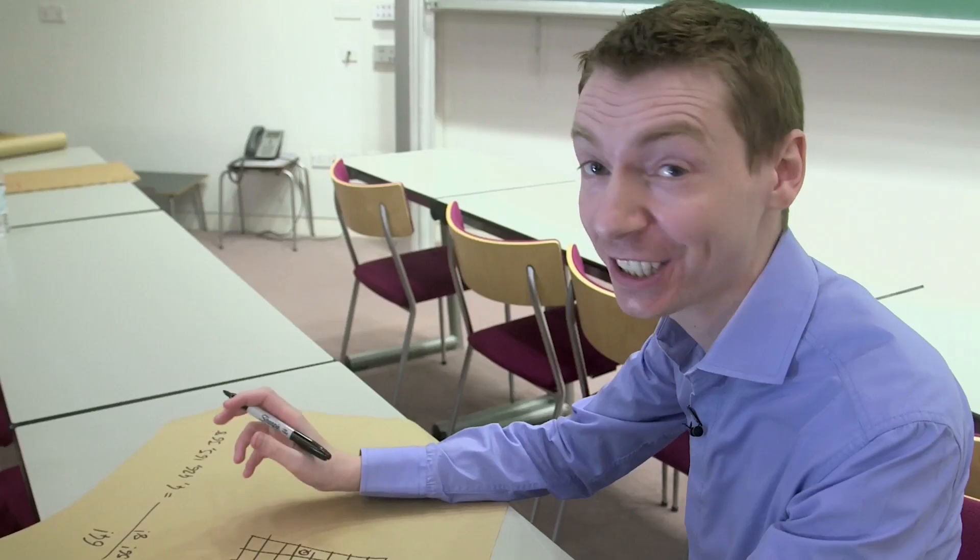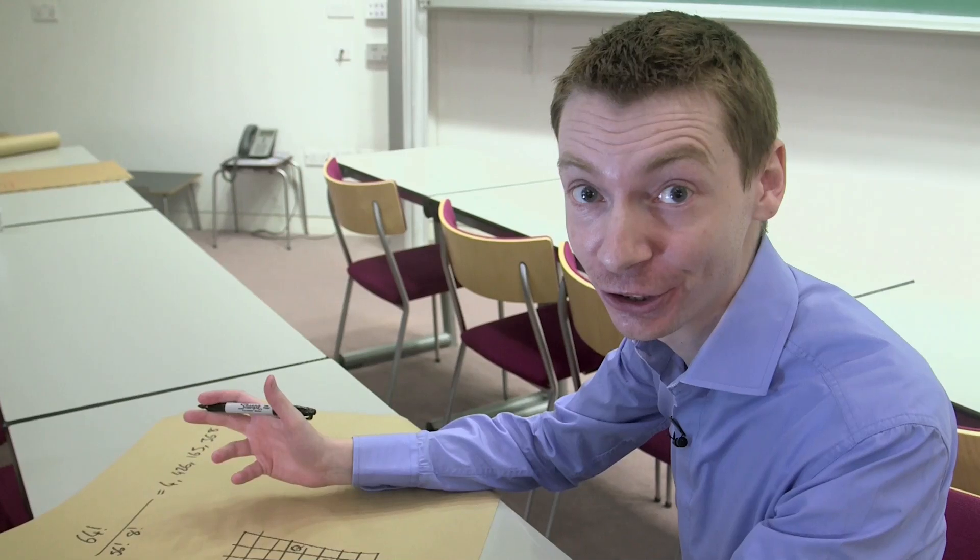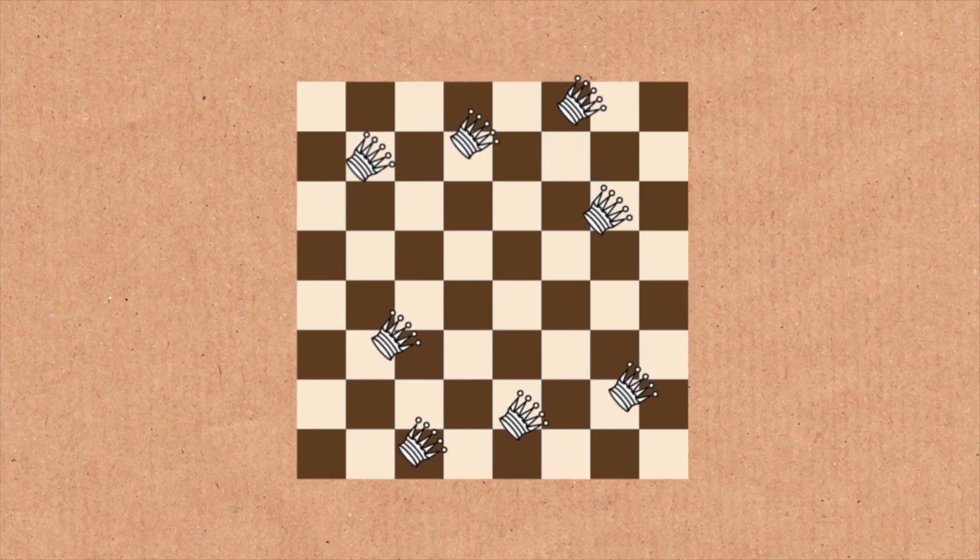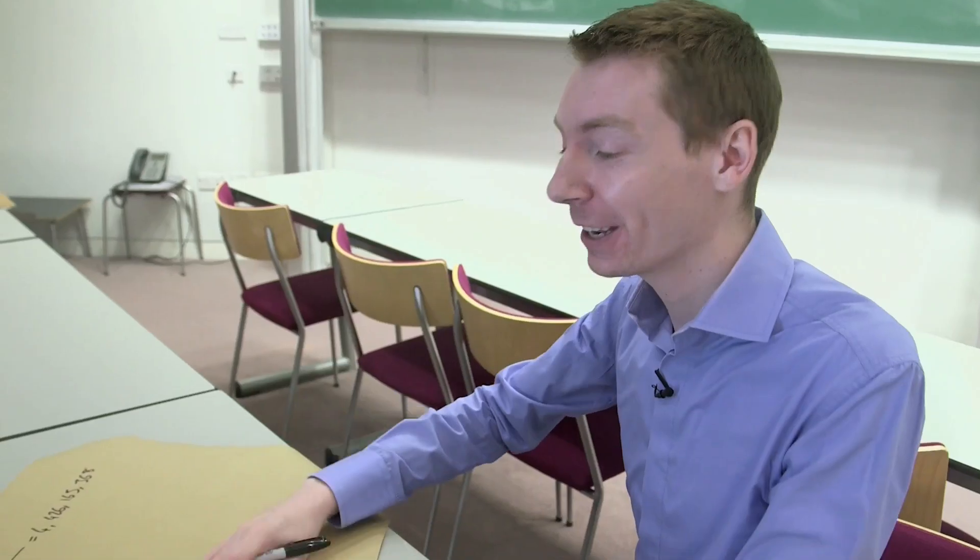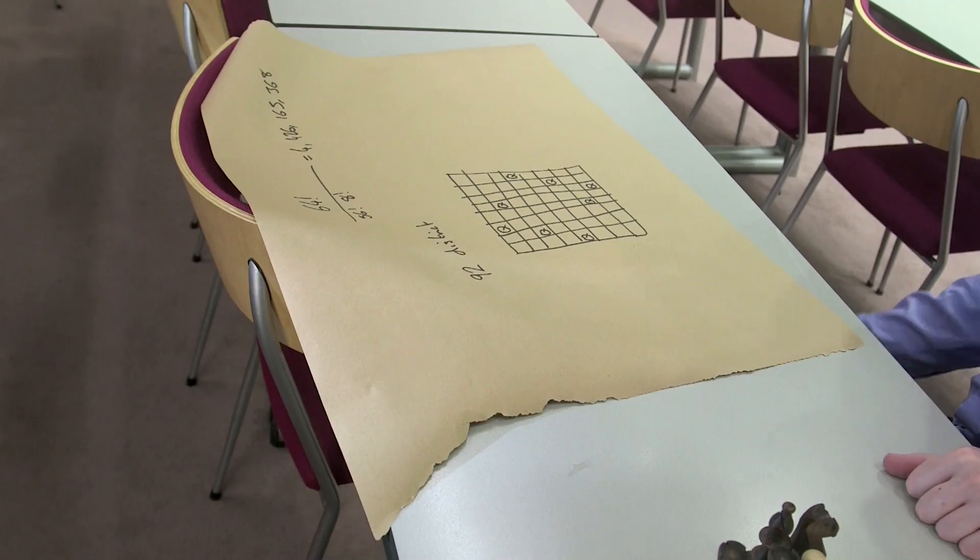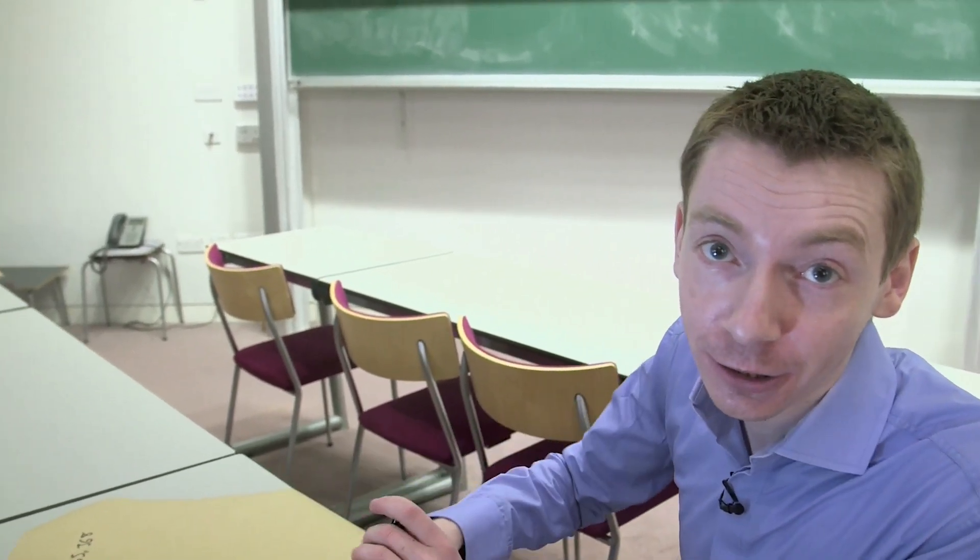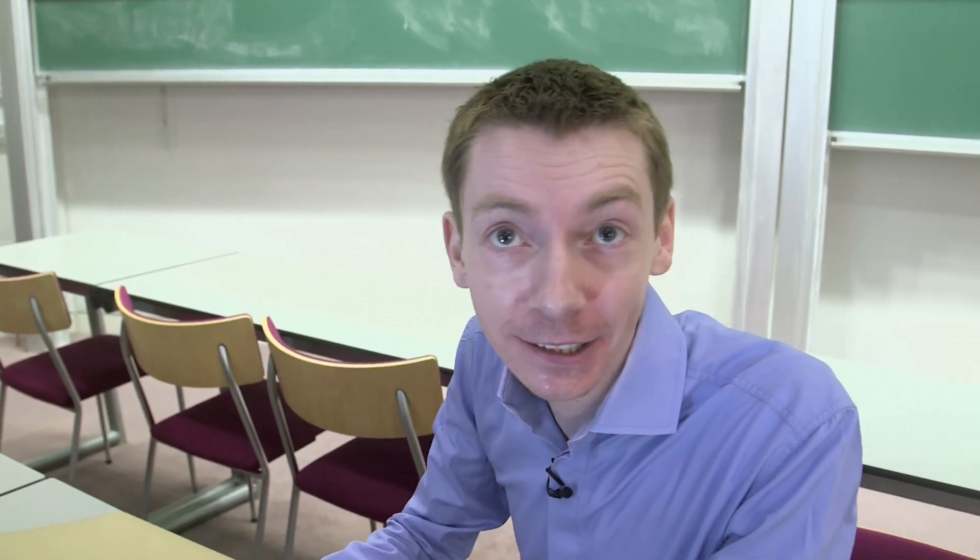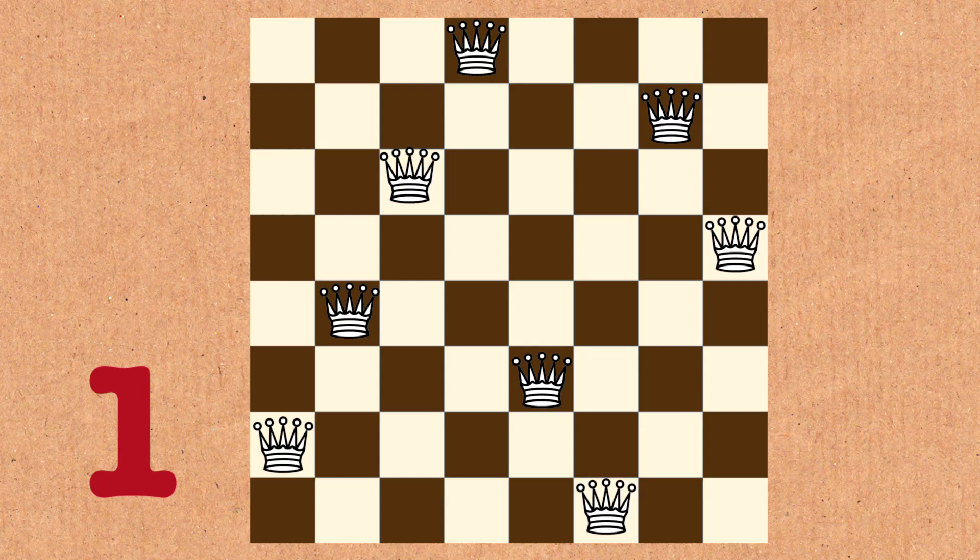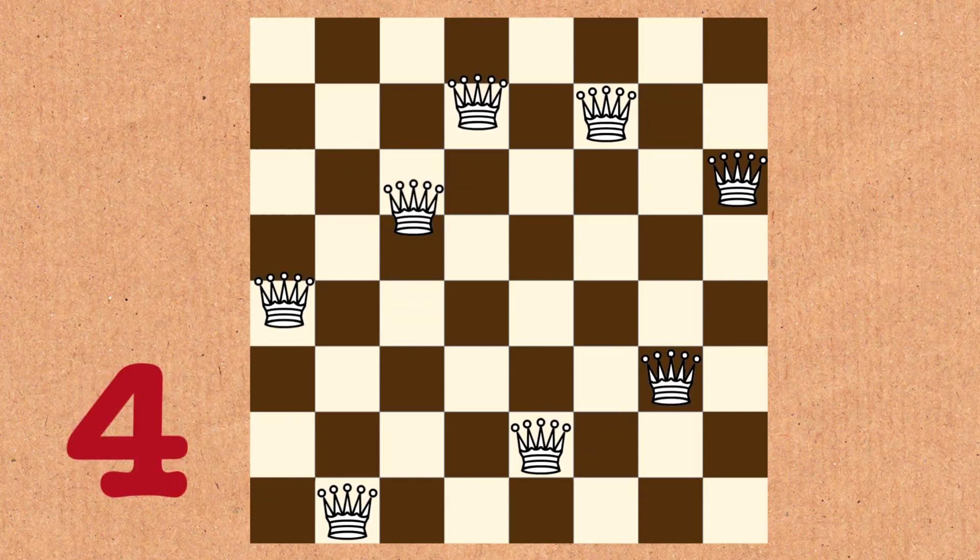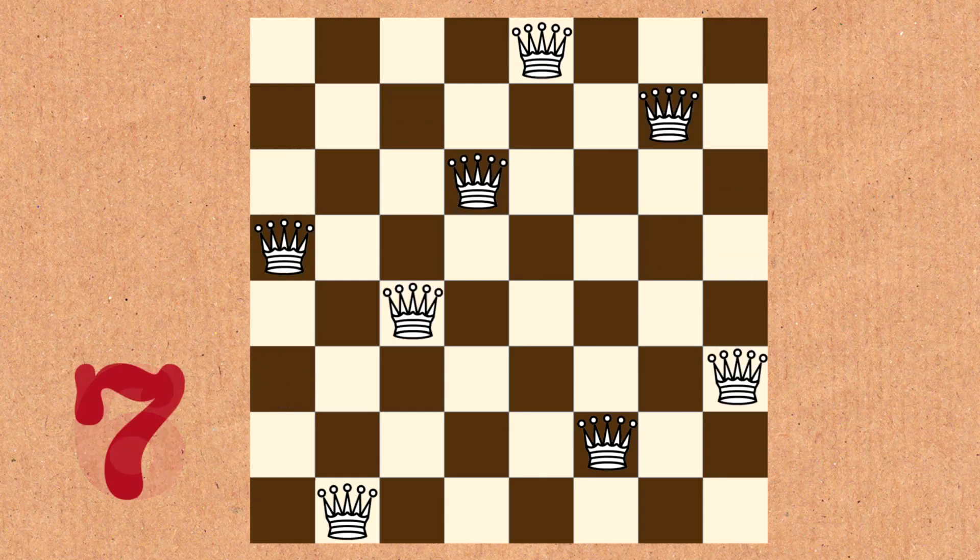Now, there are 92 distinct solutions that you can have. That includes rotating the board and reflecting the board as well. So they're not all going to be really different. Some of them are just turning this 90 degrees. That would count as a solution. Now, there are 8 ways that you could rotate the board and reflect it. 4 rotations and 4 reflections. So, how many actual individual ways are there to do it? There's 12.